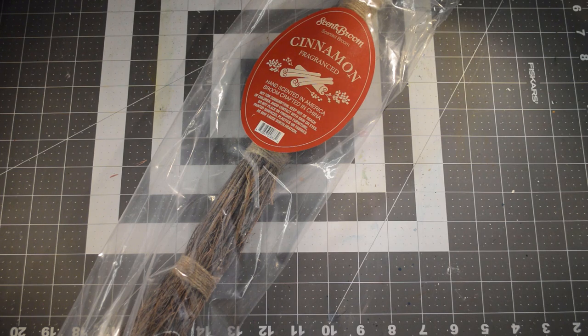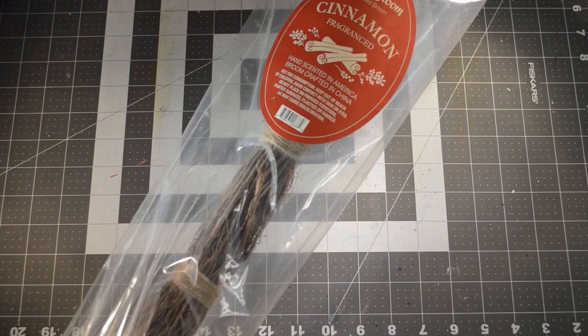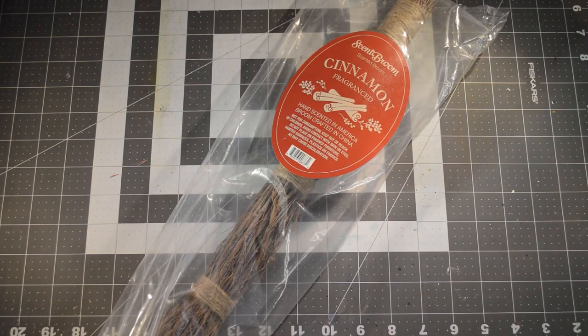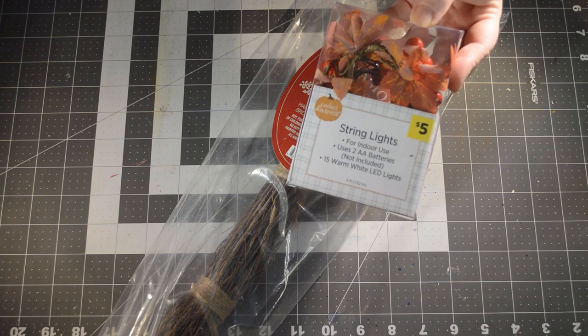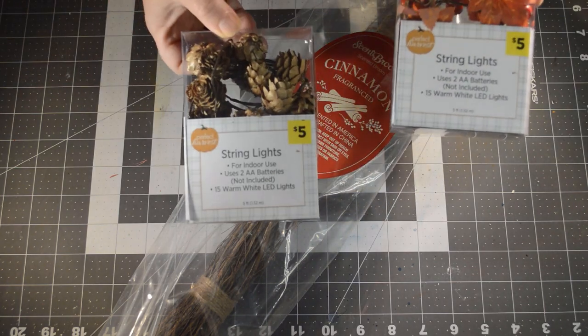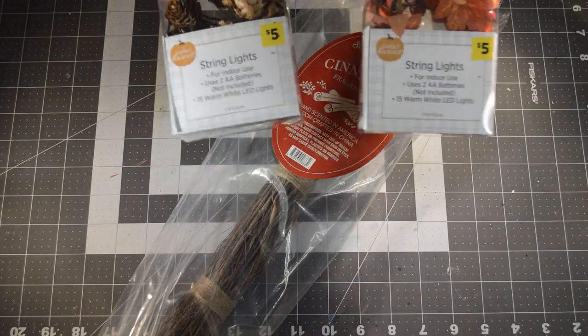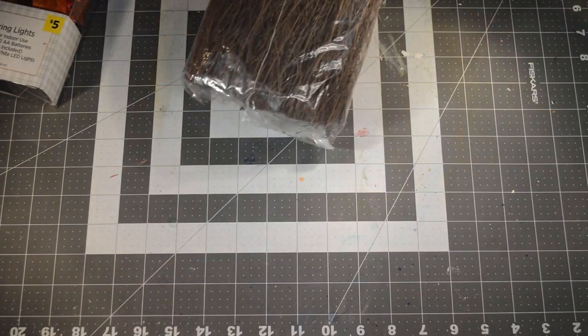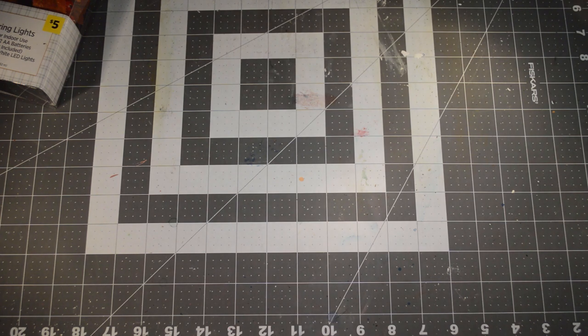Welcome back everyone. Today I have a very easy, inexpensive, and fast fall project for you to try. I found these great string lights with pine cones and leaves with holly berries, pretty fall color leaves with holly berries on them. I also grabbed a cinnamon broom while I was up at the dollar store.